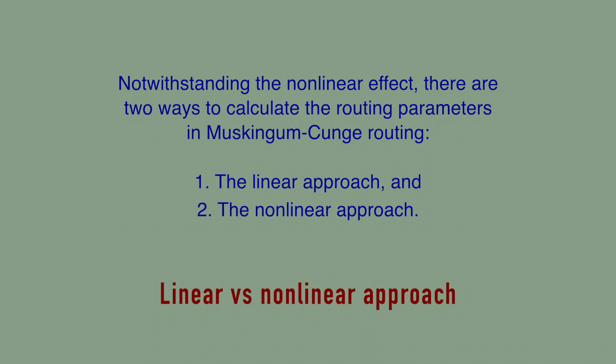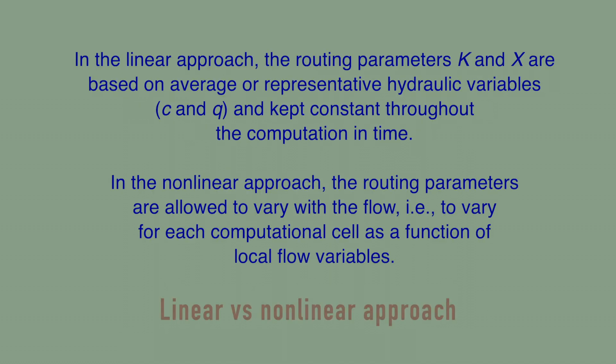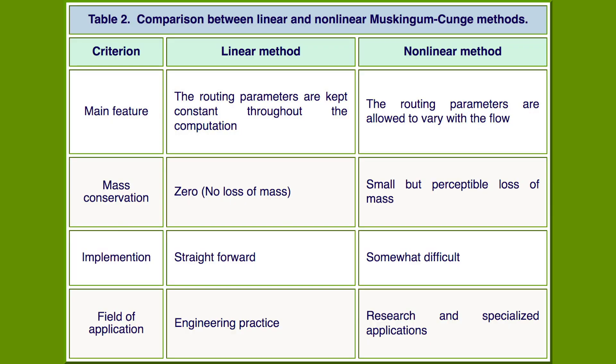Notwithstanding the nonlinear effect, there are two ways to calculate the routing parameters in Muskingum-Cunge routing: one, the linear approach, and two, the nonlinear approach. In the linear approach, the routing parameters K and X are based on average or representative hydraulic variables — that is, C and Q — and kept constant throughout the computation in time. In the nonlinear approach, the routing parameters are allowed to vary with the flow, varying for each computational cell as a function of local flow variables. The tradeoffs between linear and nonlinear Muskingum-Cunge routing are described in this table.